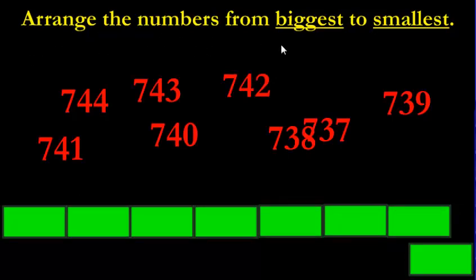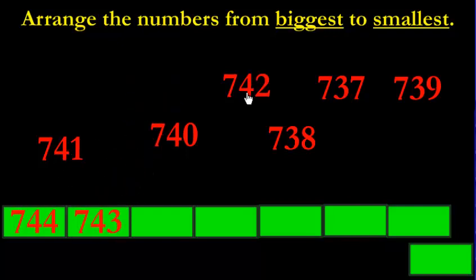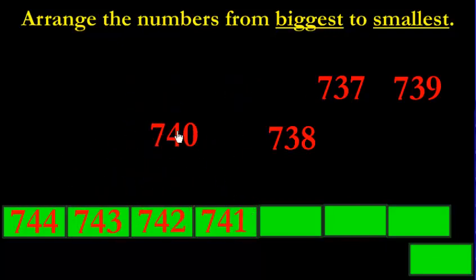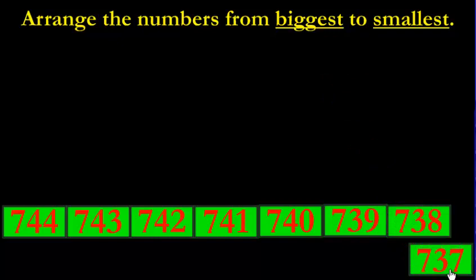And then one more — arrange these numbers from biggest to smallest. They all start with 7. So we just have to look at the last two digits. We want the biggest first: 44, 41, 43, 40, 42. I think 44 is the biggest. So: 744, 743, 742, 741, 740, 739, 738, 737. The main point I want you to take away from this is that the last two digits tell you a lot when you're putting numbers in order and knowing when the numbers change from one group of hundreds to the next group of hundreds.